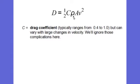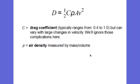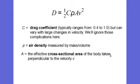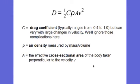This Greek letter rho is the density of the air, so the air density affects how much drag is present. The letter A in the equation stands for the effective cross-sectional area of the body taken perpendicular to the velocity V. That's why we call it the cross-sectional area — it depends on what area is perpendicular to the wind or the flow of the fluid.